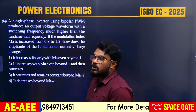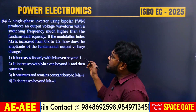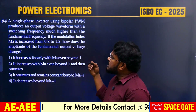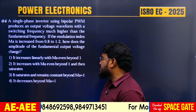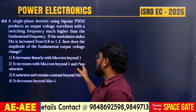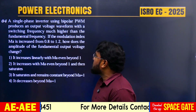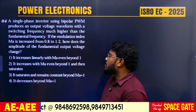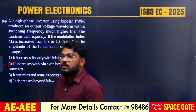Question 4: A single-phase inverter using bipolar PWM produces an output voltage waveform with a switching frequency much higher than the fundamental frequency. If the modulation index M is increased from 0.8 to 1.2, how does the amplitude of the fundamental output voltage change? The amplitude increases linearly with MA up to 1, and beyond MA = 1 it continues to increase but then saturates. So Option 2 is correct.